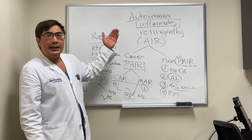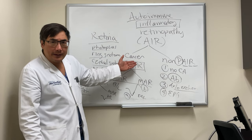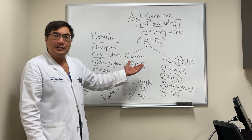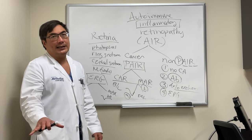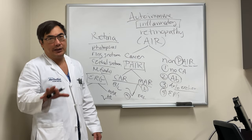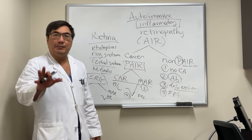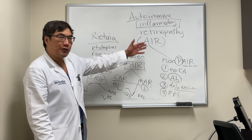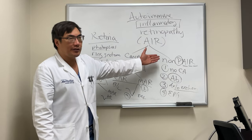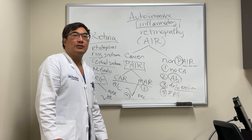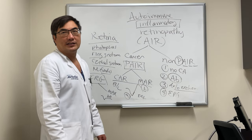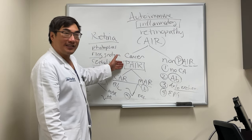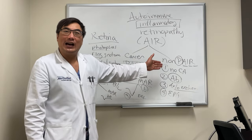Treatment is the same across types: antibody against the antibody, IVIG, plasma exchange to wash the antibody out, or immunosuppression to suppress antibody production — rituximab, methotrexate, or similar agents. Steroids are first line. And make sure there's no other inflammatory, infectious, or infiltrative disease before you call it AIR, PAR, or non-PAR.